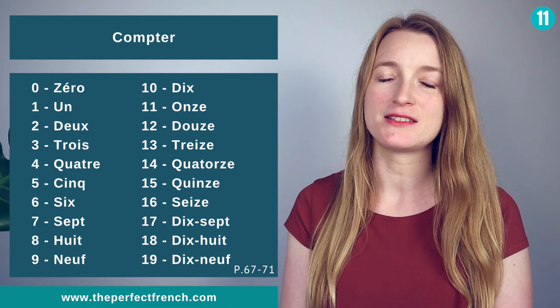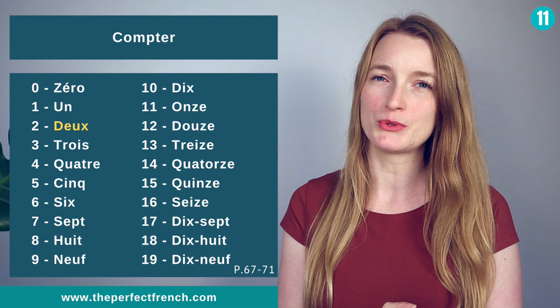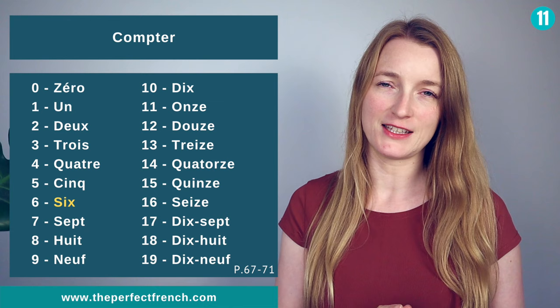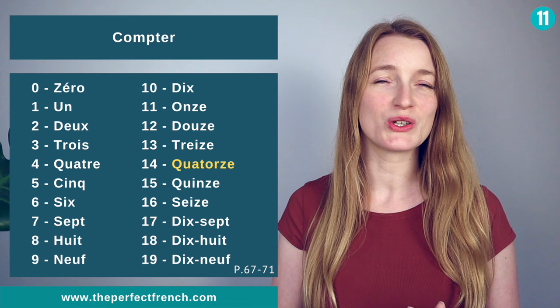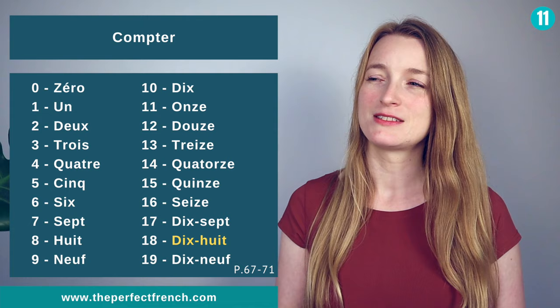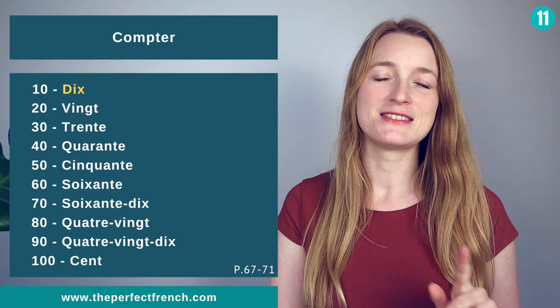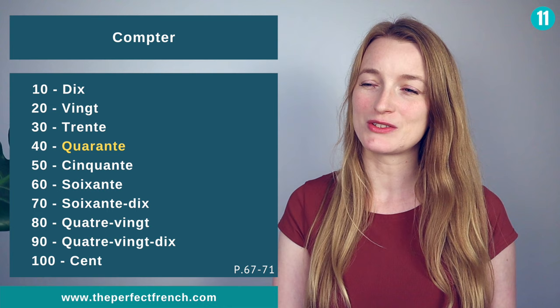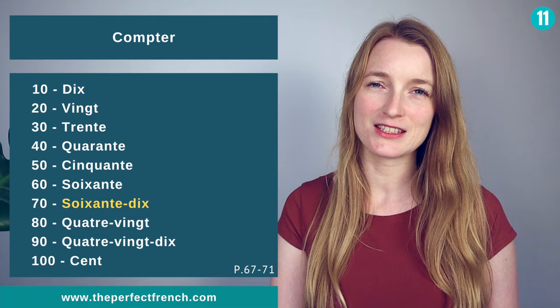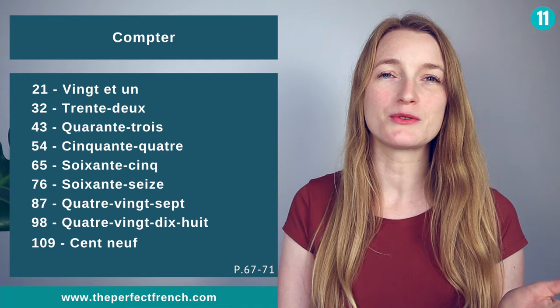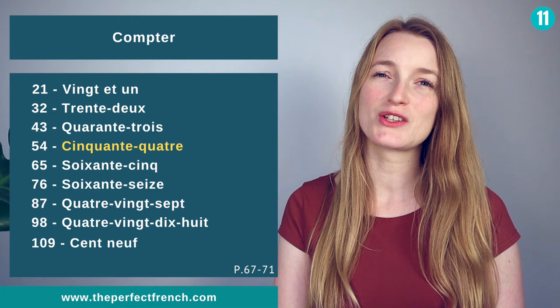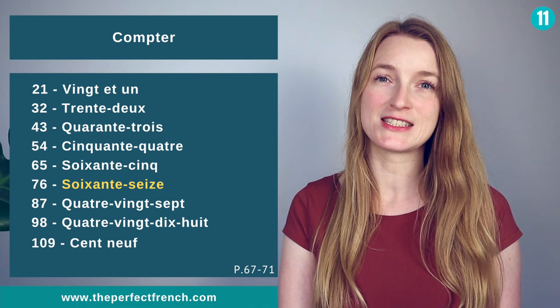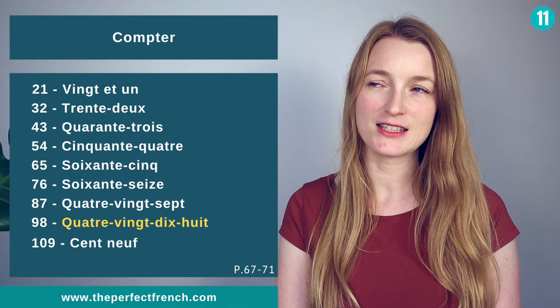Let's review a few numbers. From 0 to 19: zéro, un, deux, trois, quatre, cinq, six, sept, huit, neuf, dix, onze, douze, treize, quatorze, quinze, seize, dix-sept, dix-huit, dix-neuf. From 10 to 100: dix, vingt, trente, quarante, cinquante, soixante, soixante-dix, quatre-vingts, quatre-vingt-dix, cent. And examples between 21 and 109: vingt-et-un, trente-deux, quarante-trois, cinquante-quatre, soixante-cinq, soixante-seize, quatre-vingt-sept, quatre-vingt-dix-huit, cent-neuf.